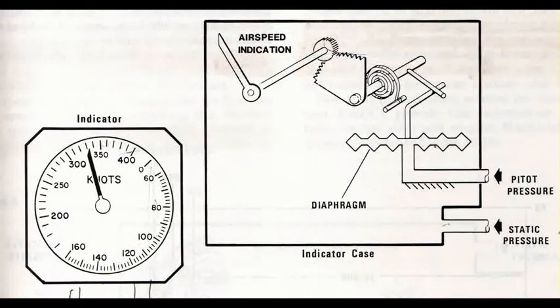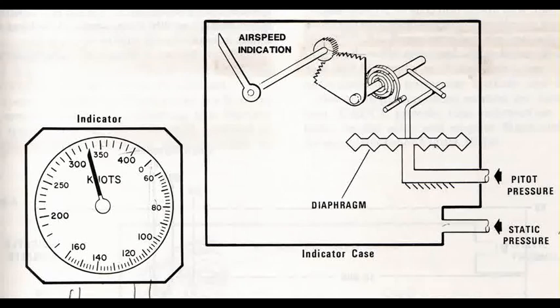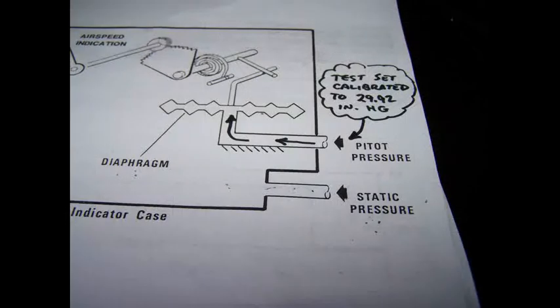As we have seen earlier, this will not produce a reliable air speed indication from your test set. Since the static cannot be controlled by the test set, a way must be found to adjust the pitot input to be at the same reference point as the static side of the diaphragm. Luckily, there's a very simple way of doing this.